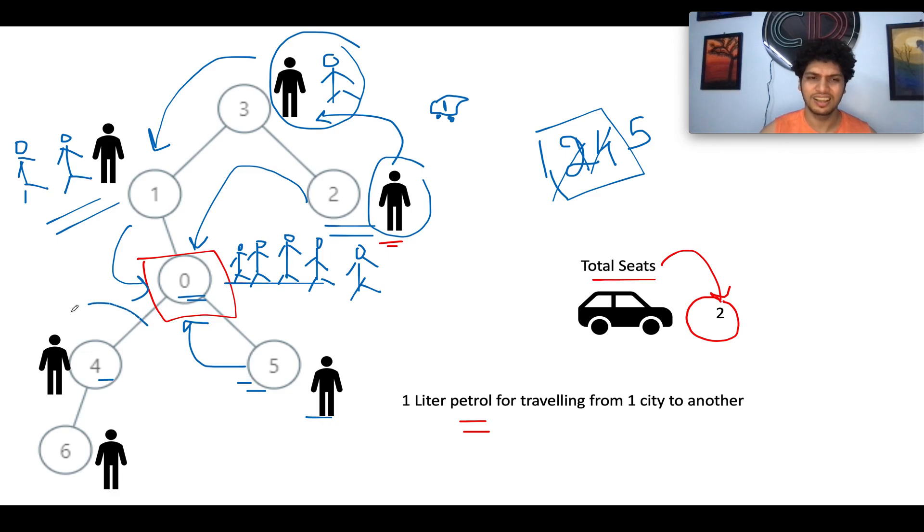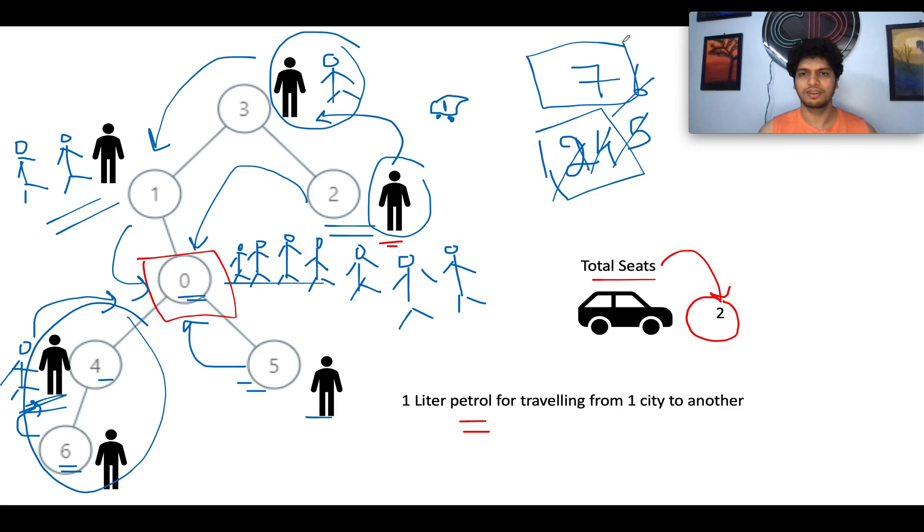And now let's consider this particular case where passengers would be traveling from city four. So let's get to the leaf node first. We will always start from the leaf node. And from city six, one passenger would be traveling to city four. It will cost one trip, so this gets updated to six. And since there are two passengers at city four, we will make sure that these two passengers travel by the same car. So total number of passengers divided by two gives you one, and that means one liter of petrol would be needed. And the answer gets updated to seven. And what we will observe, we will observe that all the passengers have finally reached the destination city, which is zero. The answer variable comes as seven, and this is what we were expecting.